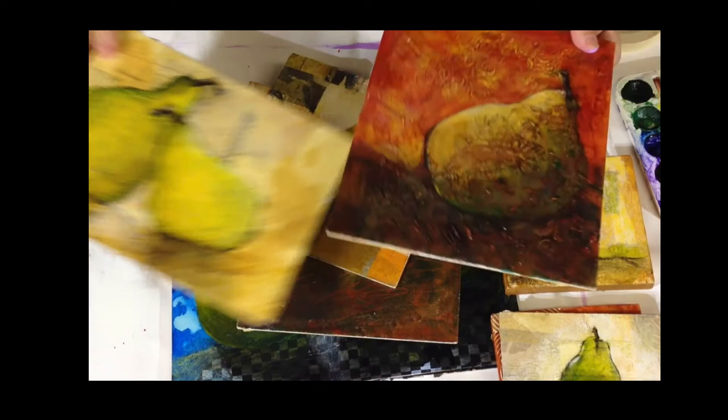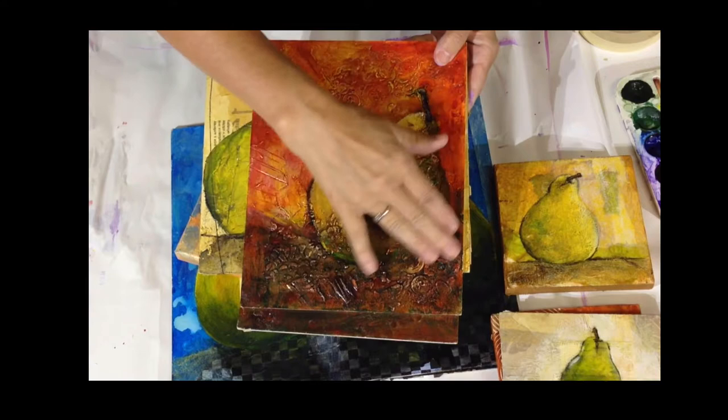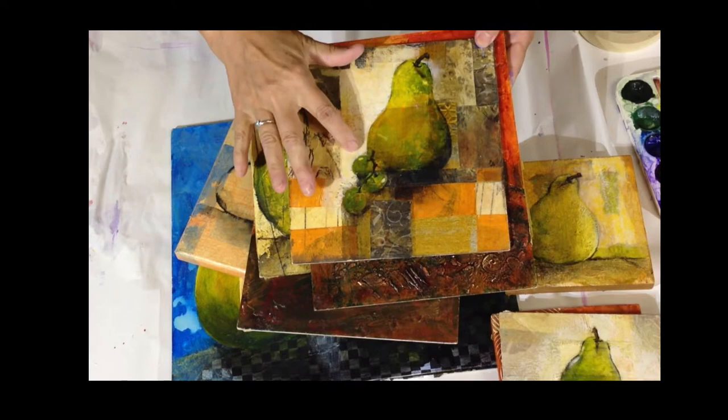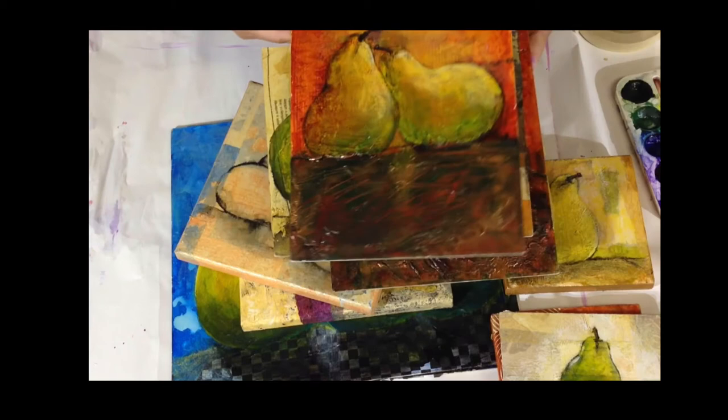This is a pear with different textures in the background created with what I call speckle or that wall compound. Collage elements with paint on top here. Here's more pears again with a textured effect and then paints on the top.